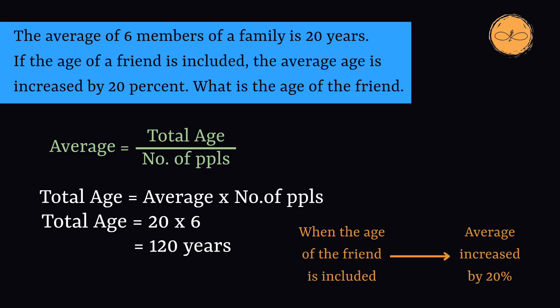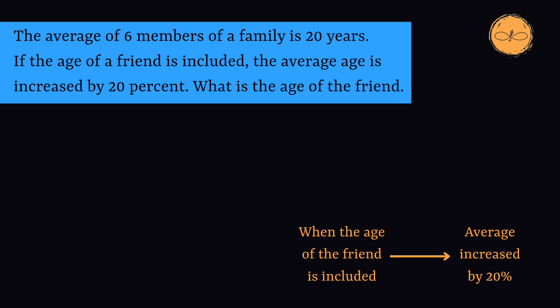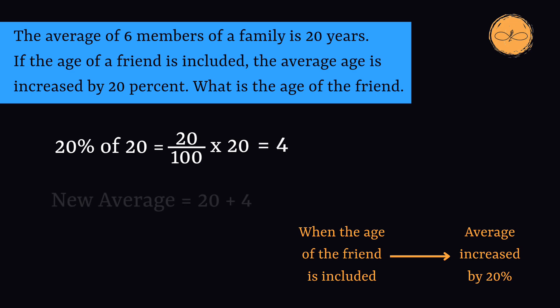It's given in the question that when the age of the friend is included, the average is increased by 20%. So, 20% of 20 is 20 divided by 100 multiplied by 20, which is 4. The new average including the friend will be 20 plus 4, which is 24.